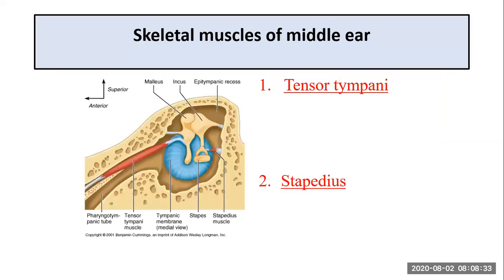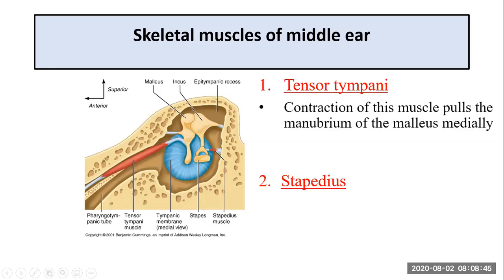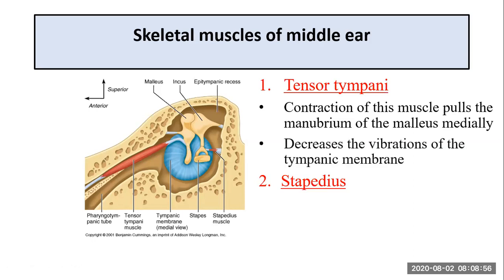The two skeletal muscles of the middle ear which are involved in the reflex include the tensor tympani muscle and the stapedius muscle. The tensor tympani muscle, when it contracts, pulls the manubrium of the malleus medially, which decreases the vibrations of the tympanic membrane.